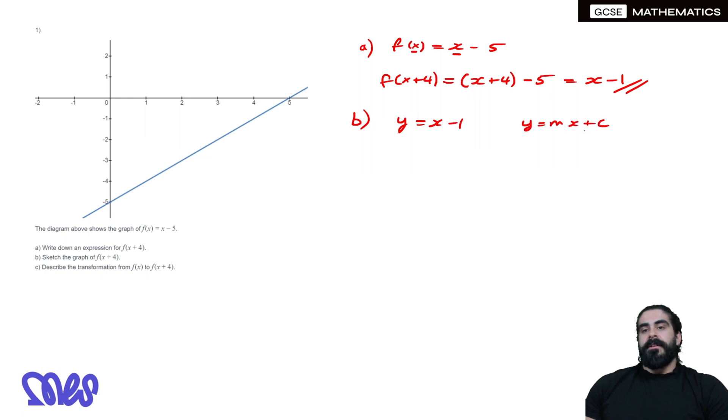Taking this graph back by 4, it's going to cross the x-axis at 1 and the y-axis at -1. Then you just draw a line straight through, so it's going to look something like that.